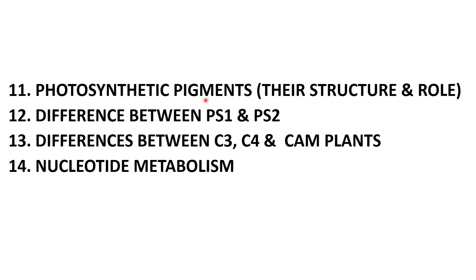In almost all previous year question papers you will find a question on photosynthetic pigments or on photosystem 1 and photosystem 2 — related to the Z-scheme or in separate parts. Look at the structure: what is the structure of chlorophyll, what are the central ions in it, what is the coordination bonding? There are a few pigments — xanthophylls, carotenoids, chlorophyll — try to differentiate between them and understand the main ions and components playing important roles in each pigment's activity.